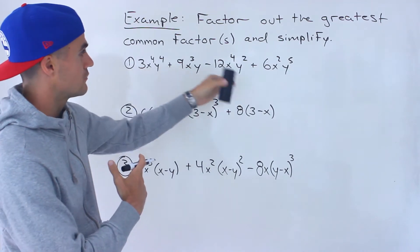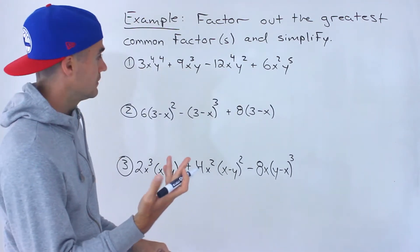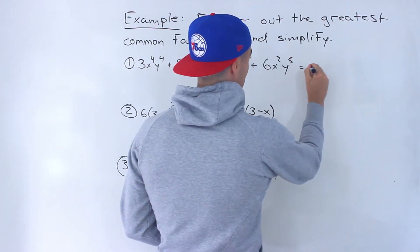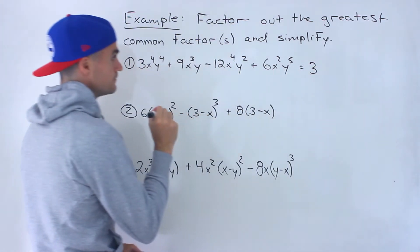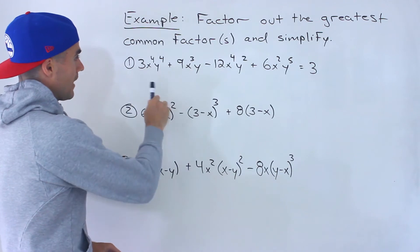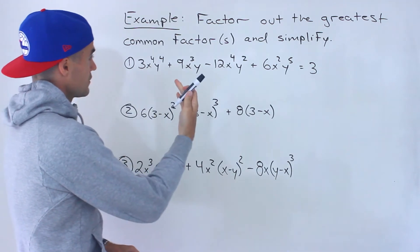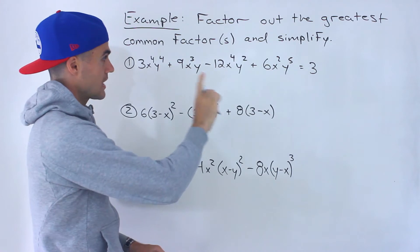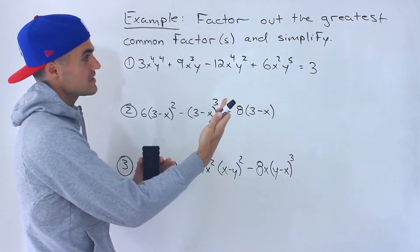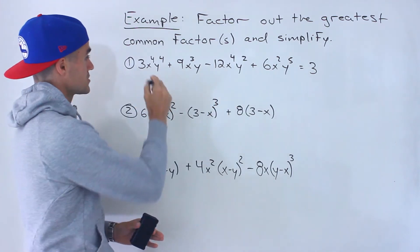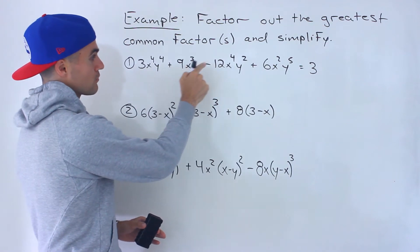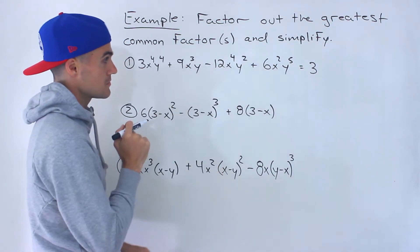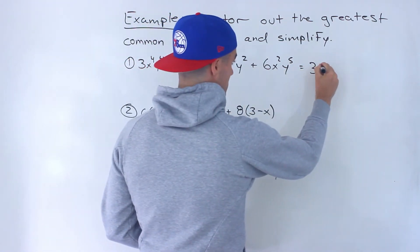Notice between 3, 9, 12, and 6 we can take out a 3. So we could take out a 3, and then we move on to the variables. We have x variables in each of the expressions, and what we can take out is x to the power of the lowest exponent. We've got x⁴, x³, x⁴, and x². Out of all of those, x² has the lowest exponent.